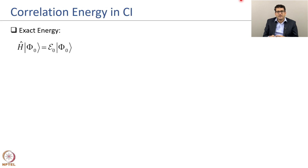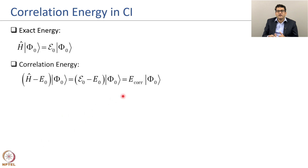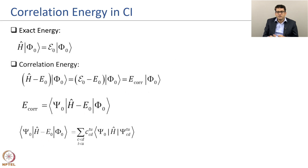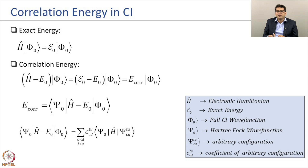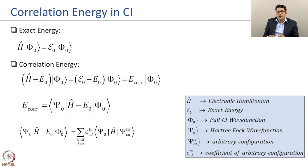The correlation energy in CI is given by the Schrödinger equation: the total energy minus E0, the Hartree-Fock energy. The correlation energy can be expressed where H is the electronic Hamiltonian, ε0 is the exact energy, φ0 is the full CI wave function, ψ0 is the Hartree-Fock wave function, ψ_CD is the doubly excited configuration, and C is the corresponding coefficient. To describe the correlation energy in the CI picture, you need only the doubly excited configurations, but these see the effect of singly excited and all other excited configurations through their interactions.